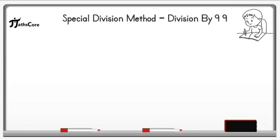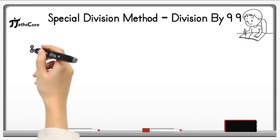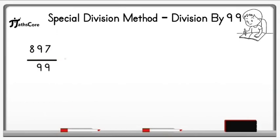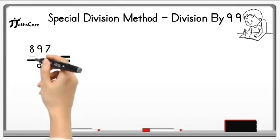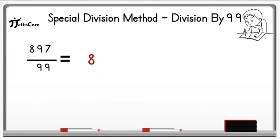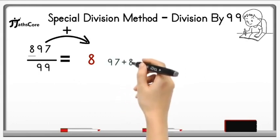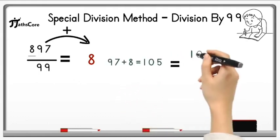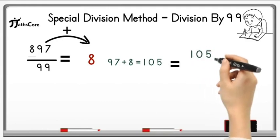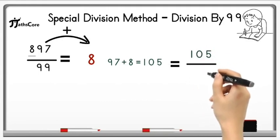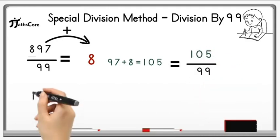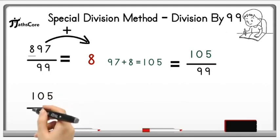Let's solve the third example: 897 divided by 99. Write down the hundreds digit, which is 8, and add 97 to it. So 97 plus 8 equals 105. Now divide 105 by 99 — this is possible because 105 is greater than 99. So take 105 divided by 99 and follow the same procedure again.